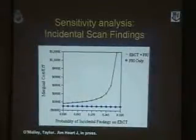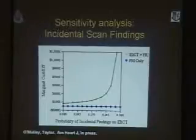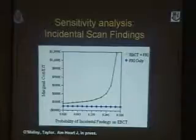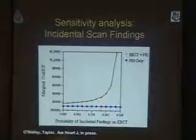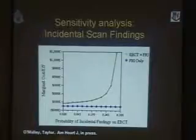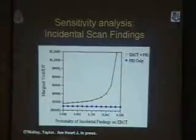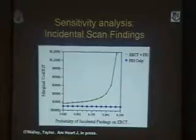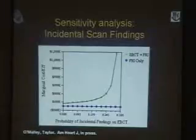Incidental scan findings — we don't really talk about it much; it's a dirty little secret. How common are incidental findings? If it ranges anywhere from 2% to 32%, you can see that around 20% there's an inflection point. If more than one in five people have an incidental scan finding that engenders induced cost, we've got a problem. Some populations — older populations, populations from the middle sections of the country where there are a lot of pulmonary nodules — have very high rates of incidental findings. So we have to be mindful of incidental findings and the induced cost from those.